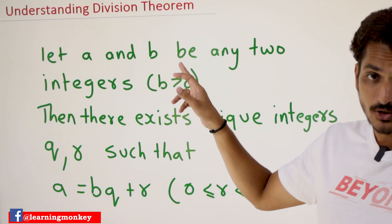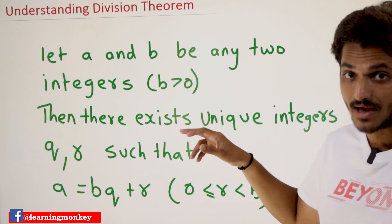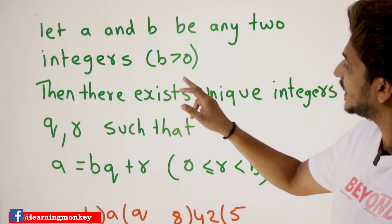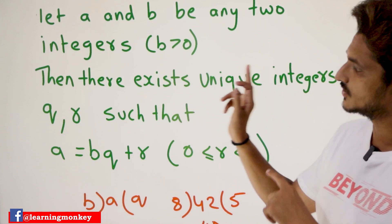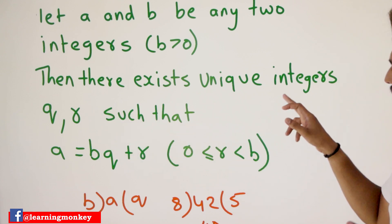So A and B be any two integers. If you are having these two integers, then there exist unique integers Q comma R. You have to identify this properly.